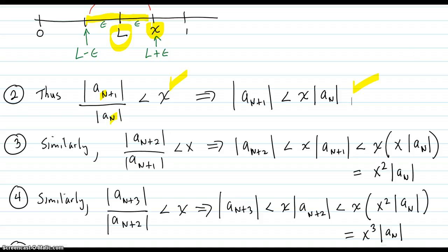Then similarly, what about a_{n+2} divided by the previous a_{n+1} absolute value? That's also less than x, because all those ratios beyond the original n are all less than x. They're all in this band. So you get to multiply this over, and you get this absolute value is less than x times that one. But then this here is this one, which is less than x times absolute value of a_n.